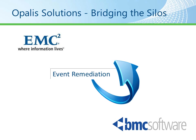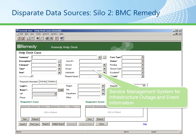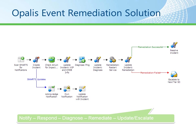The next solution we're going to talk about is event remediation between EMC and BMC. The first thing we look at is the first silo, EMC Smarts, and the unhandled notifications. The IP address we were looking at before has an event notification raised based on that asset. The second silo is shown empty — it is the ticketing system, in this case Remedy. Now we can take a look at the Opalis event remediation solution based on those two silos.